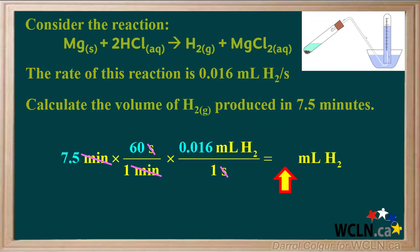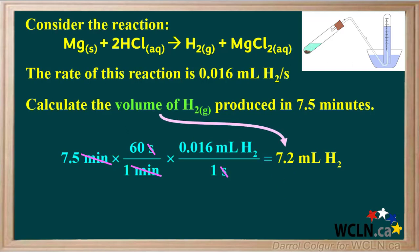We can get the numerical answer by taking 7.5, multiplying by 60, and multiplying by 0.016, which comes out to 7.2. So our final answer for the volume of hydrogen produced in 7.5 minutes is 7.2 milliliters of hydrogen.